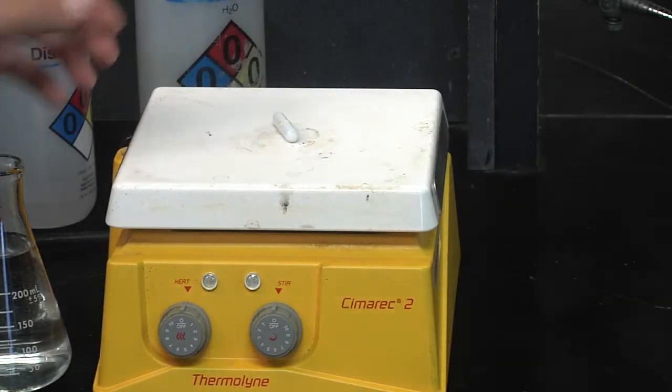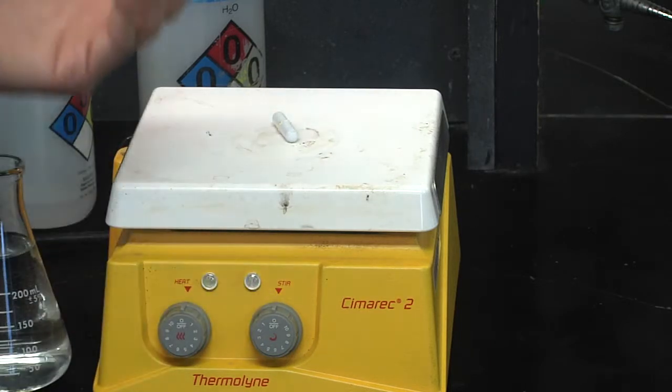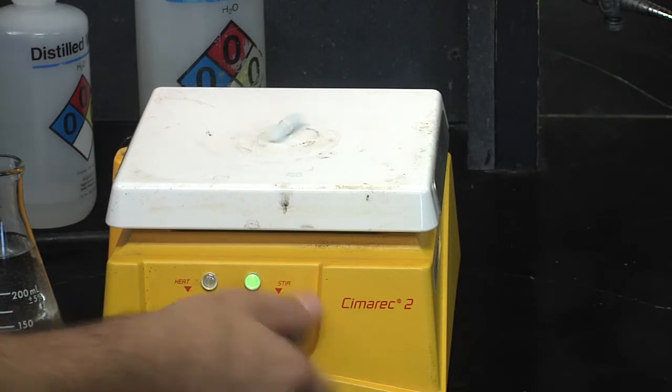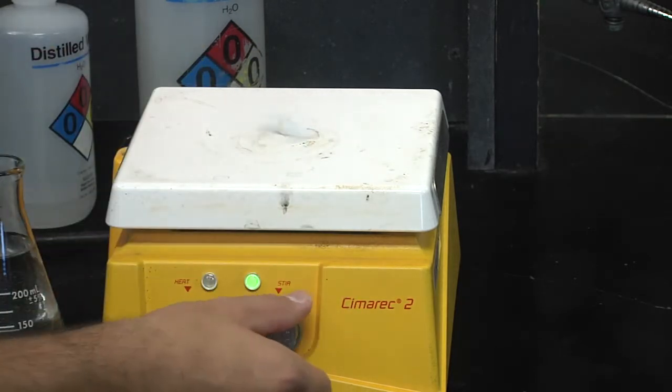Be sure to keep the lid on and stir often. Now this, my friends, is a dual-purpose heating and stirring plate. Typically, it's called a hot plate. As you can tell, if you turn it on, we will see our stir bar begin to spin.